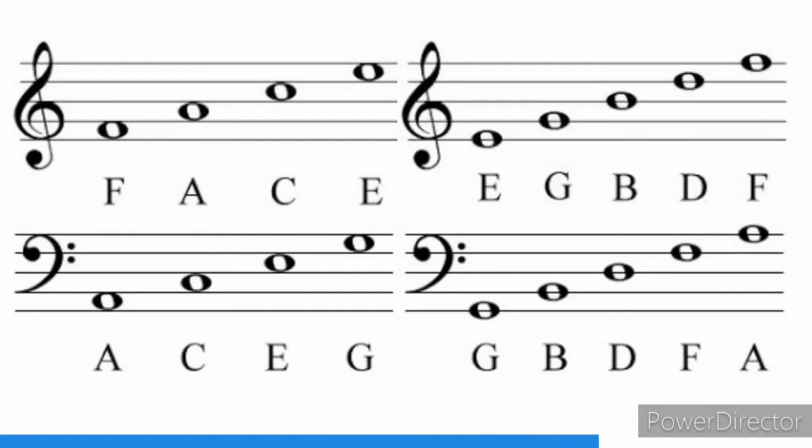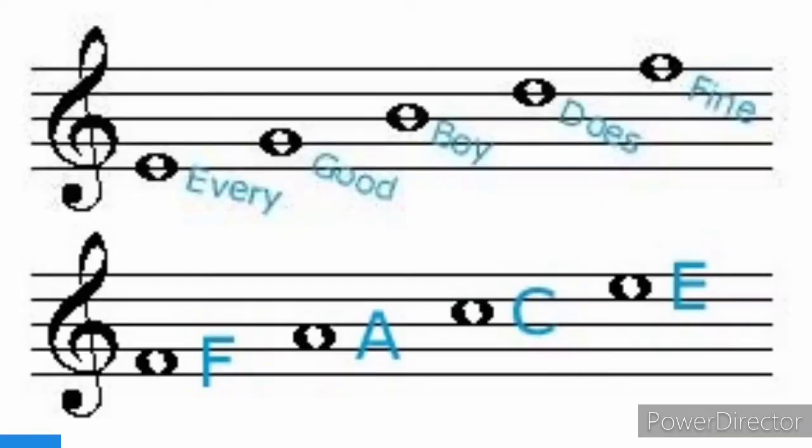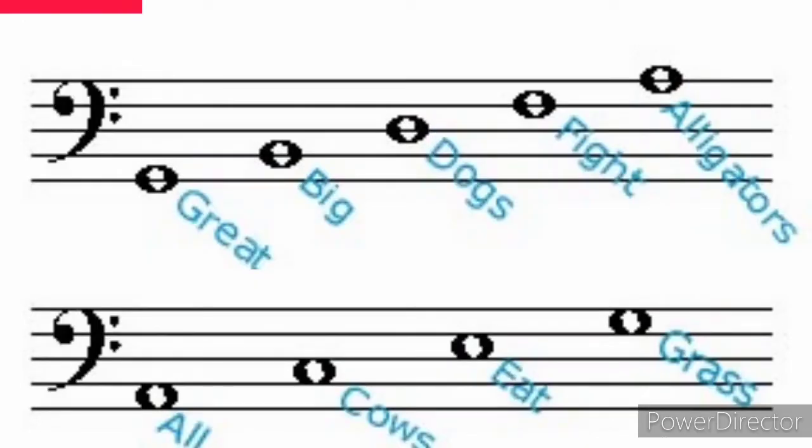F-A-C-E, E-G-B-D-F, then G-B-D-F, E. These are the lines and spaces. The treble means Every Good Boy Does Fine for the lines, and the spaces is just F-A-C-E which is your face. For the bass we have Great Big Dogs Fight Alligators, and the spaces are All Cows Eat Grass.